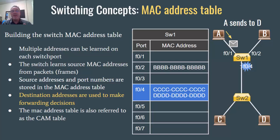In this video, I'm going to talk about switching concepts and specifically how the switch builds its MAC address table. The switch is a smart layer 2 device, and it learns devices' MAC addresses and then maps them to the switch port numbers. This is helpful because the switch can forward frames to their specific destination, as opposed to a hub, which just spits frames out every port except the one it came in on.